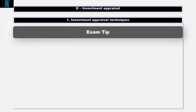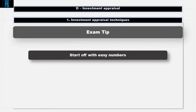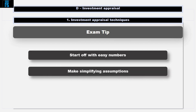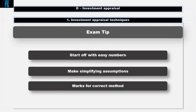In the exam, start off with the easy numbers and put those in the pro forma and work your way up to the harder numbers. If you can't do the harder numbers or you're running out of time, make a simplifying assumption. This exam is method marked, which means even though you won't get any marks for that number being correct, you get credit for how you use that number later on. If you use the wrong number in the right way, you get the marks.